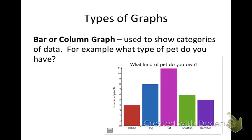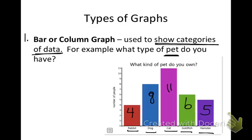We're going to begin with the different types of graphs. Our first one is bar or column graphs, especially if we use Google Spreadsheets. Bar or column graphs are used to show categories of data. For example, what type of pet do you have? Here is a graph showing what kind of pet you own. Maybe make a quick sketch in your notebook. Out of the people asked, four people own a rabbit, eight have a dog, eleven have a cat, six have goldfish, and five have a hamster.